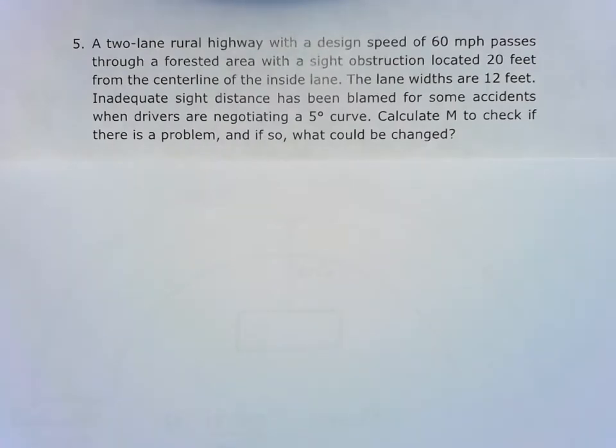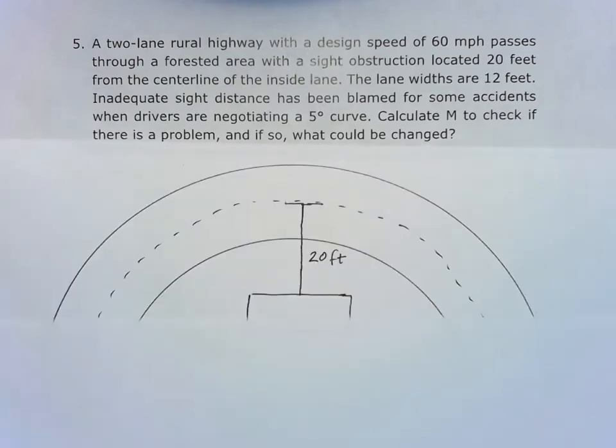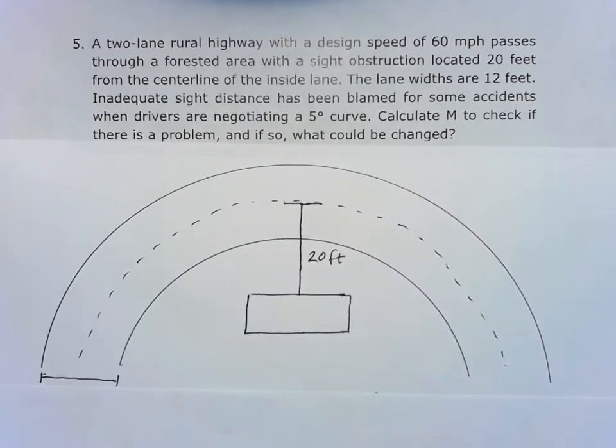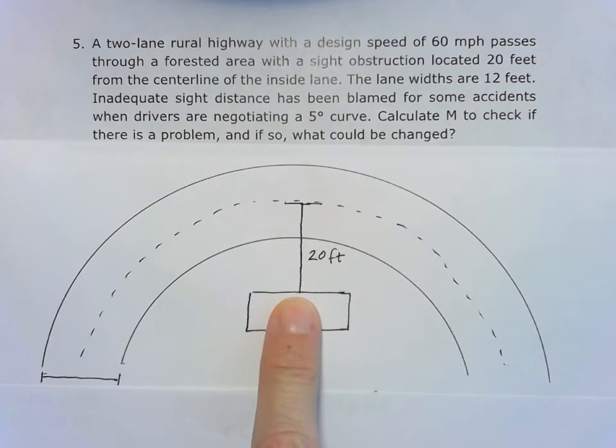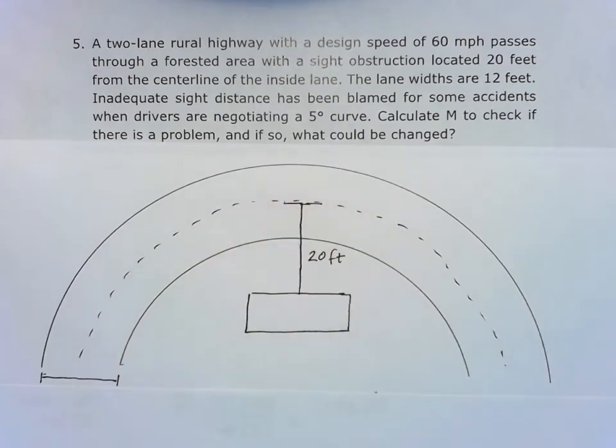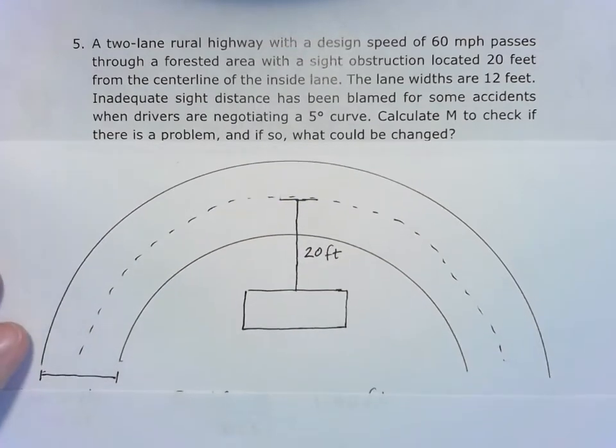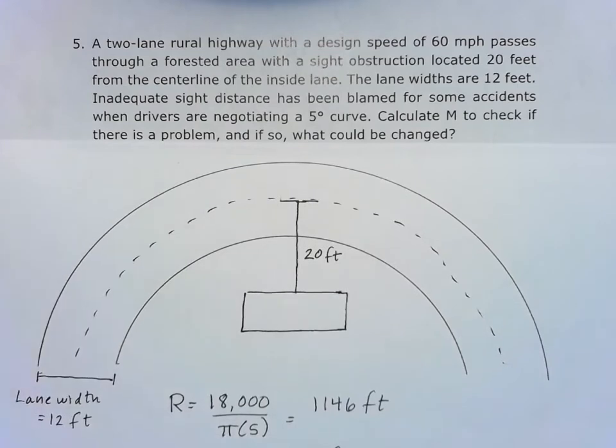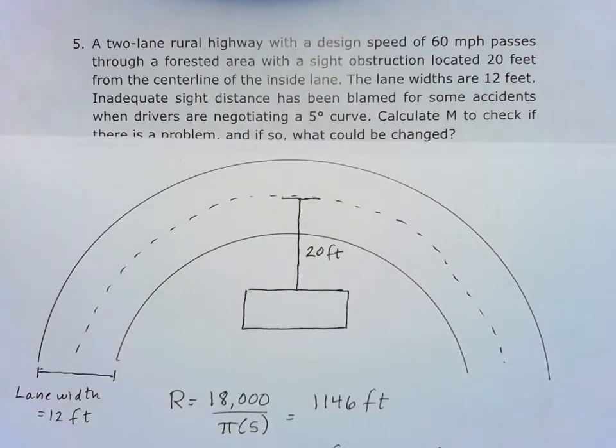So just drawing this with the variables that we're using. Here's my situation where I've got my obstruction 20 feet away from the center line of the inside lane. And I'm trying to figure out what that M actually is. We want to make sure that we'll have that distance.